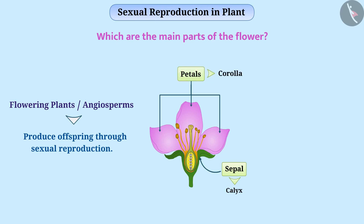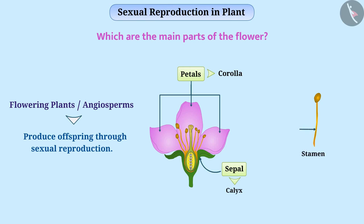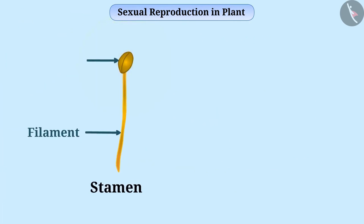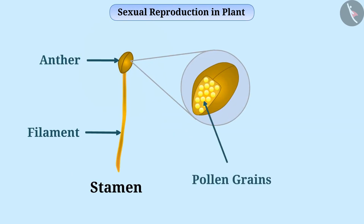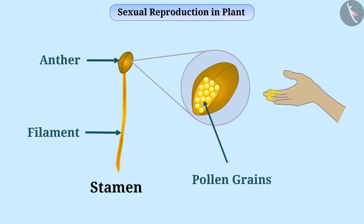Within the circle of petals in the flower, you will see some thin tubes the top of which is inflated. Each of these is the male reproductive organ of the plant called a stamen. The long thin tube-like part of the stamen is called the filament and the inflated upper part is called the anther. The anther generates pollen grains and carries them within it. Pollen grains are generally yellow and contain the male gametes of the plant.